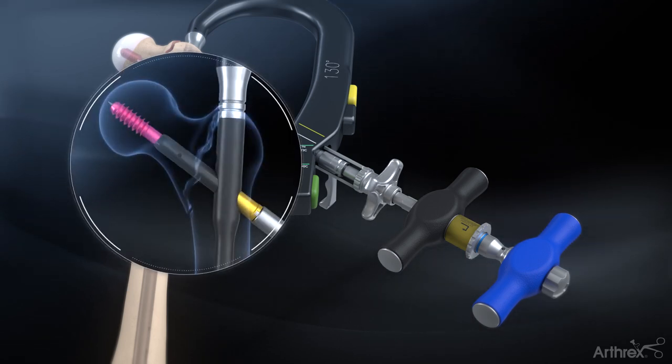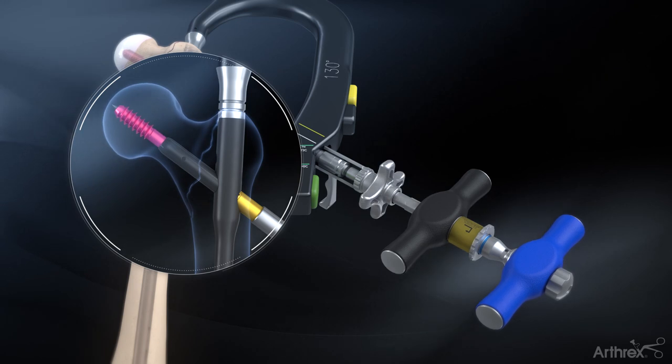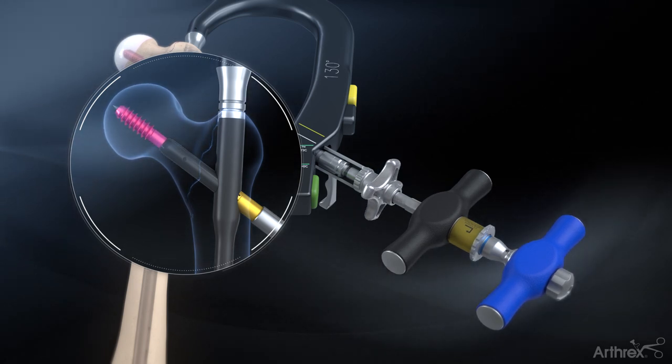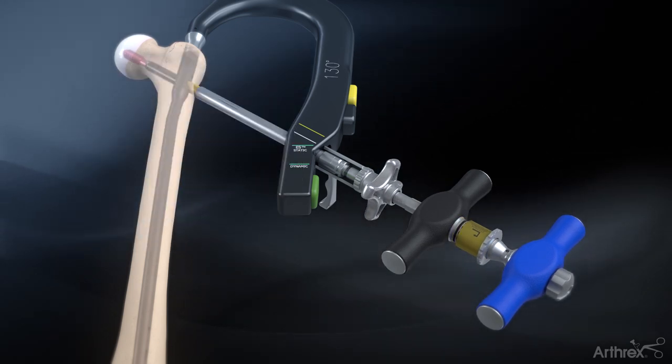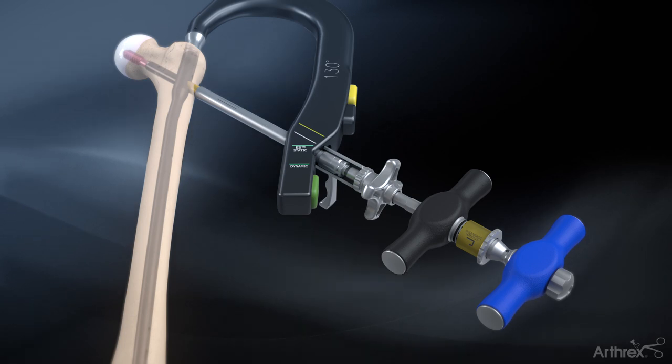For initial compression of the fracture, push the compression sleeve towards the targeting arm and rotate clockwise until the desired compression is achieved. Pull back on the gold knob and turn counterclockwise to disengage the blue handle and engage the black handle. The black line will now be showing.